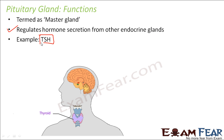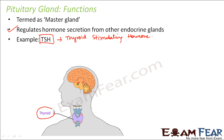One example is TSH — thyroid stimulating hormone. This hormone is released by the pituitary gland, and its purpose is to stimulate the thyroid gland to release thyroid hormones. So the pituitary gland releases TSH, which stimulates the thyroid gland to release thyroid hormones like T3 and T4. Basically, this hormone is used to stimulate another gland so that it can release its own hormones.